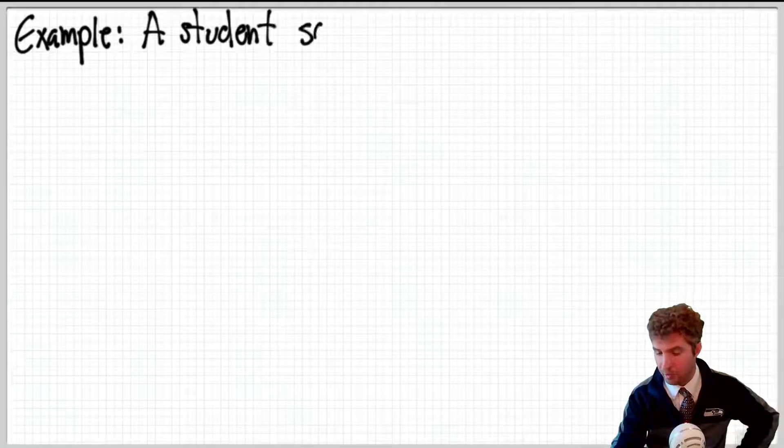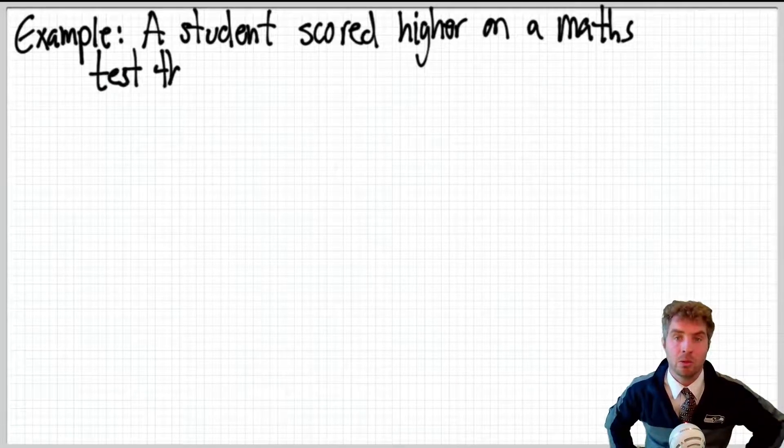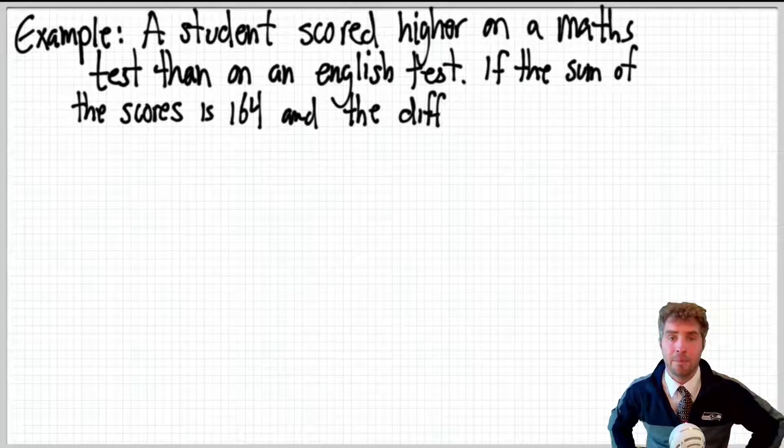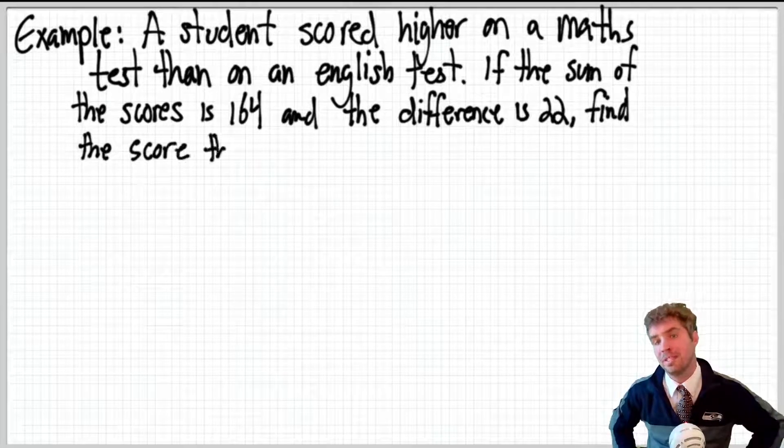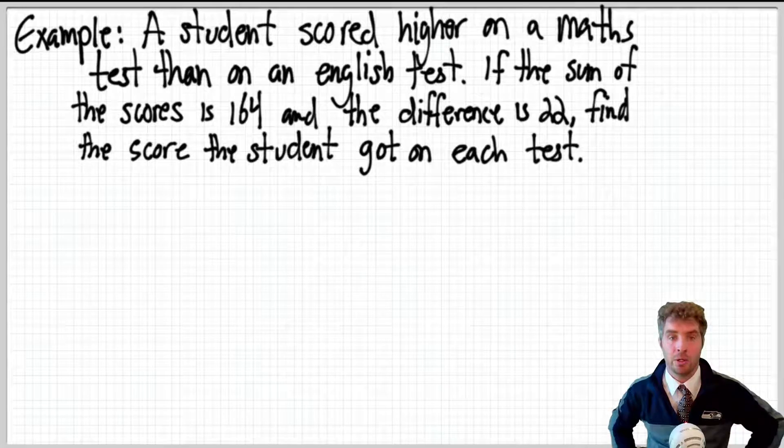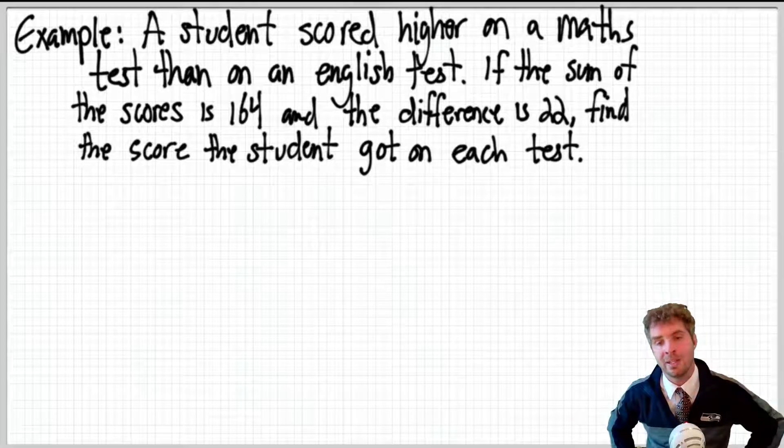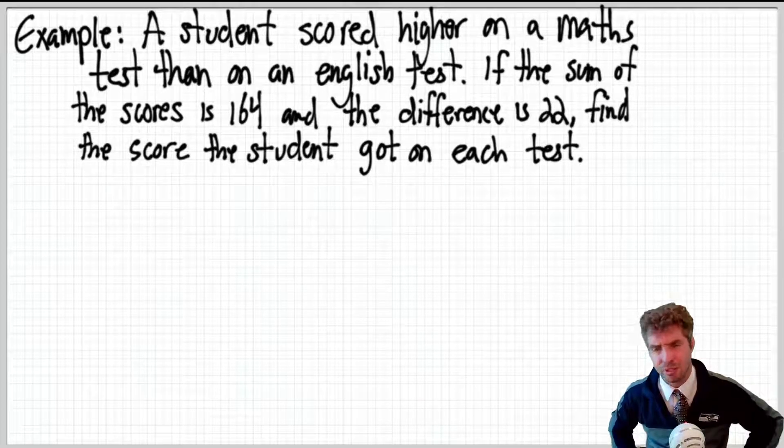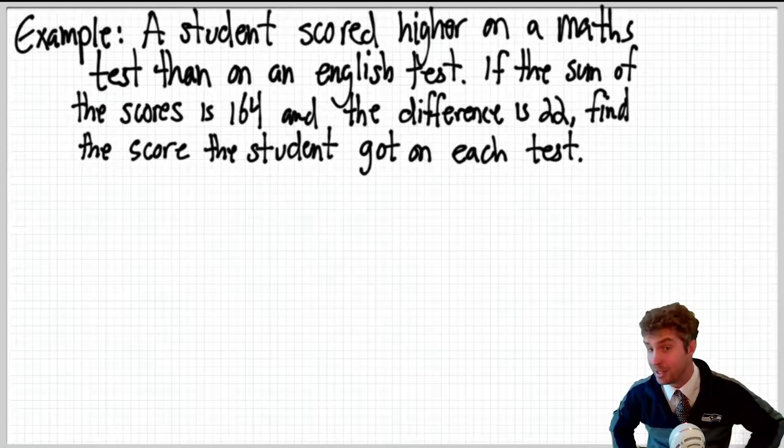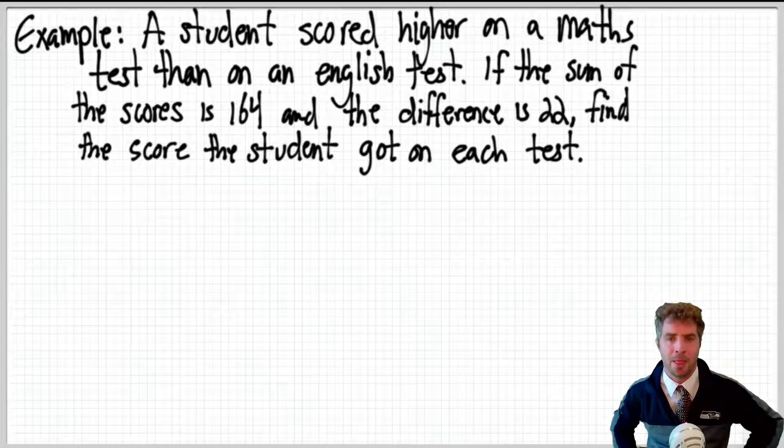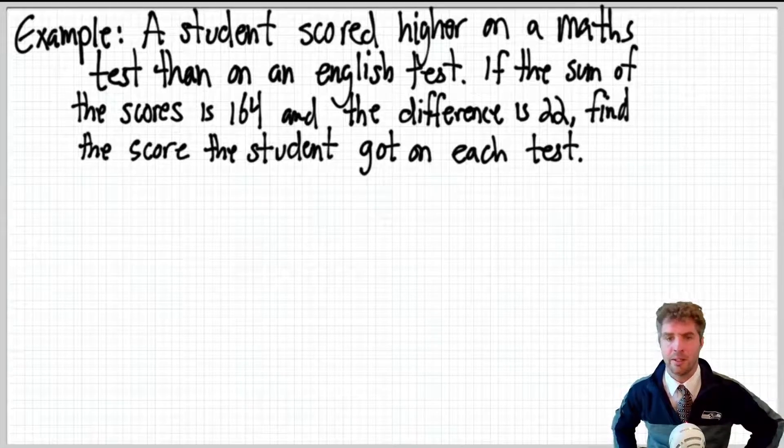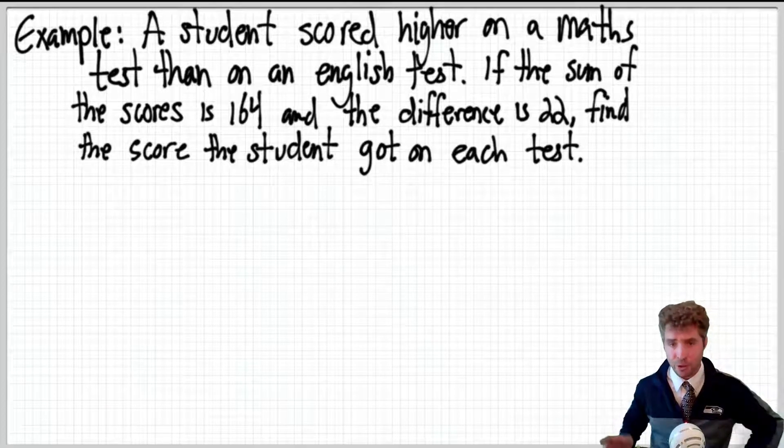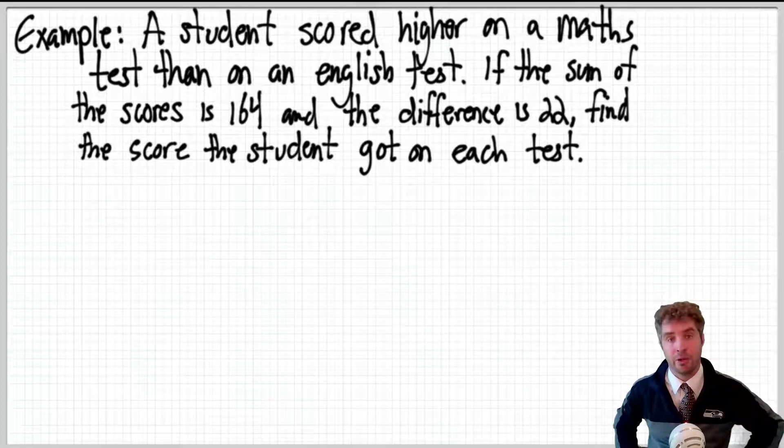I'll speed up my writing here a bit because there's a fair lot of it. A student scored higher on a maths test than on an English test. That would be the case for me. If the sum of the scores is 164 and the difference is 22, find the scores the student got on each test. So, we don't know what they scored. This is maybe a little bit of a ridiculous situation. This isn't the kind of thing that you would do much in real life. Usually, you're just given the scores, but if you had a really annoying set of teachers, like your English teacher and your math teacher, we're like, hey, let's turn our feedback into a maths problem. Maybe they would do this. So, you want to find out what you scored on the tests.